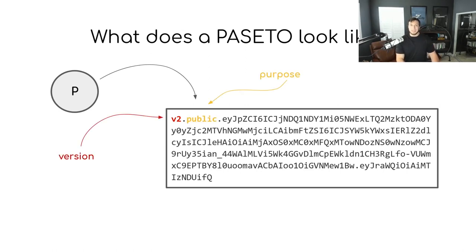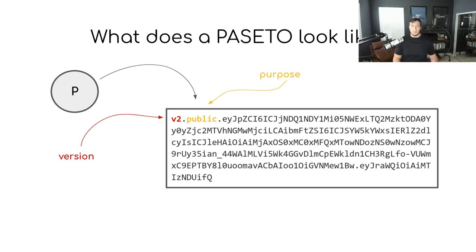The second segment of the PASETO is called the purpose. The purpose essentially describes what type of PASETO this is. There are really only two types of PASETOs — public and local — and each one has a different purpose and works with a different security model, which we'll talk about in a few minutes.